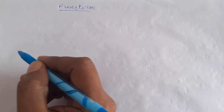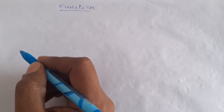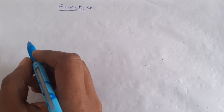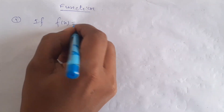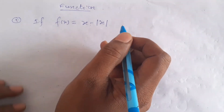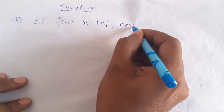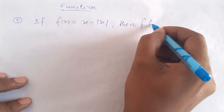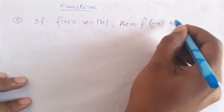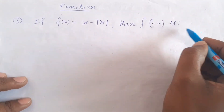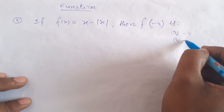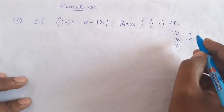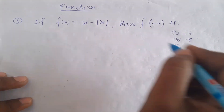I will do this example. The first step is: if f is equal to x minus mod x, then f is equal to x minus x. Option A is minus 4, option B is minus 8, and option C is 0.